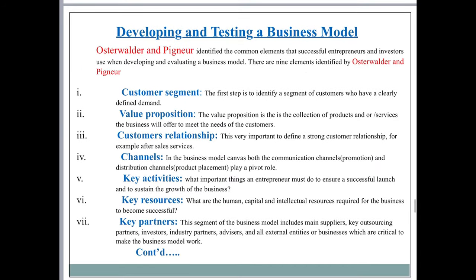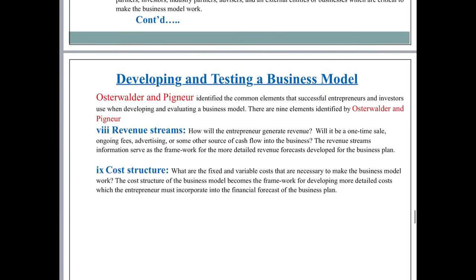Developing and testing a business model is another very important factor. Osterwalder and Pigneur identified the common elements that successful entrepreneurs and investors use when developing and evaluating a business model. There are nine elements: number one, customer segment; number two, value proposition; number three, customer relationship; number four, channels; number five, key activities; number six, resources; number seven, key partners; number eight, revenue streams; and number nine, cost structure.